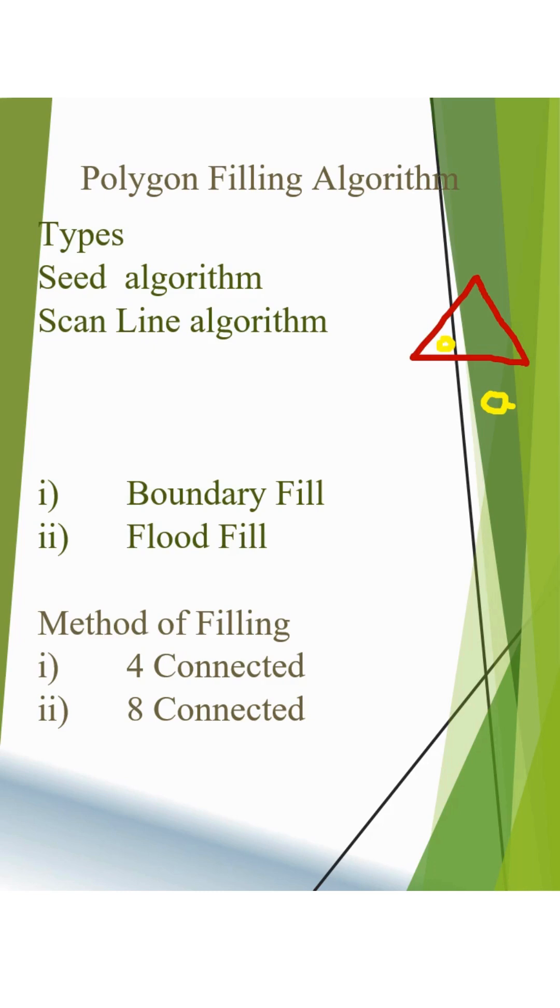Now, 4-connected and 8-connected methods help to check the next seed. In 4-connected, it checks from the top, bottom, left, and right. If we use 8-connected, it will diagonally check and fill that pixel or seed.